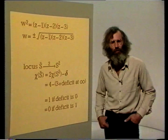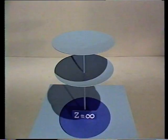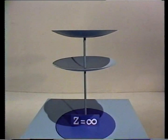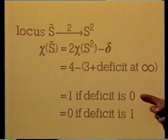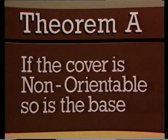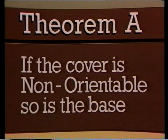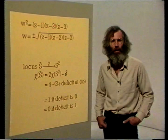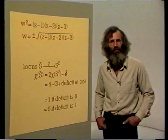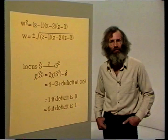The deficit will be 1 if there's a branch point over Z equals infinity, and 0 if the locus is a regular double cover at infinity. But actually there's a third possibility — there could be a pinch point at infinity. So which of the three possibilities is it? We could use the algebraic trick of taking a new variable Z tilde equals 1 over Z, but we can get the answers much more simply by using our theorems to study the three possibilities.